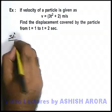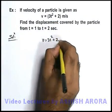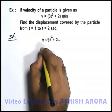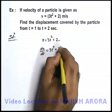Here, in this situation we can simply write v is given as 3t² plus 2. We can write v as dx by dt. This is 3t² plus 2.